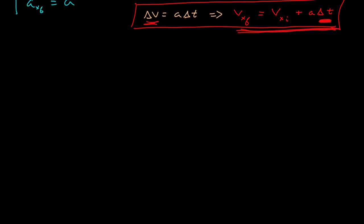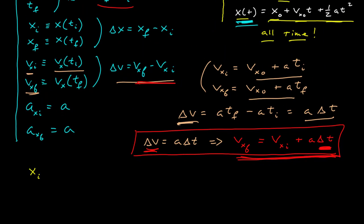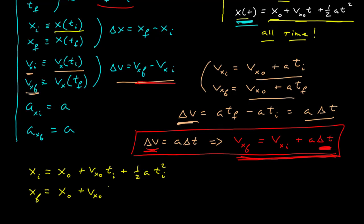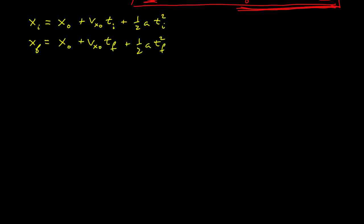Now let's calculate delta x. The initial position is the position function evaluated at the initial time: position at t equals zero, plus velocity at t equals zero times the initial time, plus one-half the acceleration times the initial time squared. The final position is position at t equals zero, plus velocity at t equals zero times the final time, plus one-half times the acceleration times the final time squared. I've just used this expression to plug in those times to get the initial and final positions. Sometimes you just have to do the algebra, and so I'm going to walk you through that here.